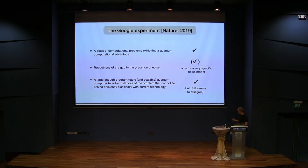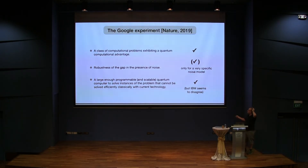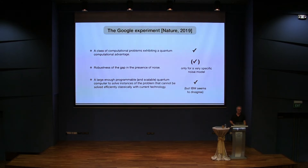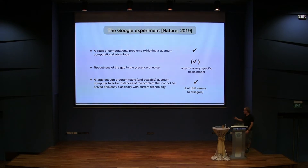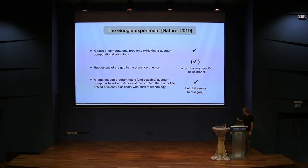Now, just quickly, I want to talk about the Google experiment, because it seems to really tick all the boxes. They're looking at this problem of random circuits — the random circuits have certain structure but it's essentially random circuits they look at. For those, one can show that sampling from their output is a difficult problem under some very mild assumptions — essentially that the so-called polynomial hierarchy doesn't collapse. You don't need to know what that means, but it's something that most complexity theorists think will not happen.